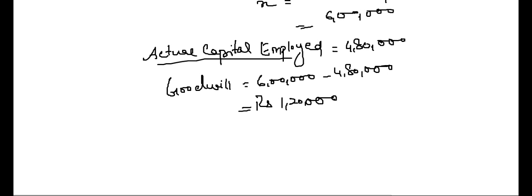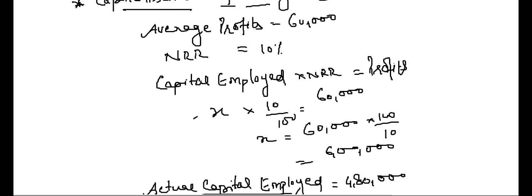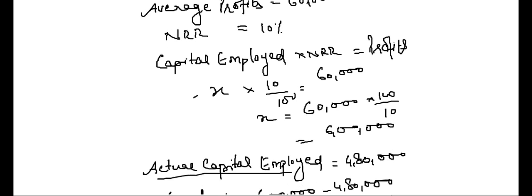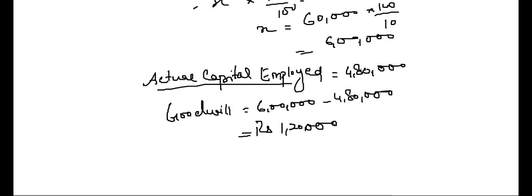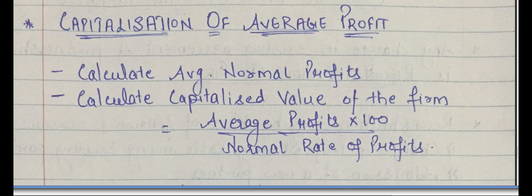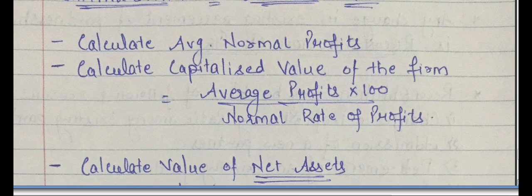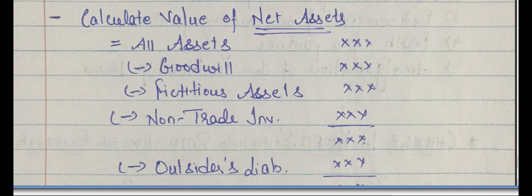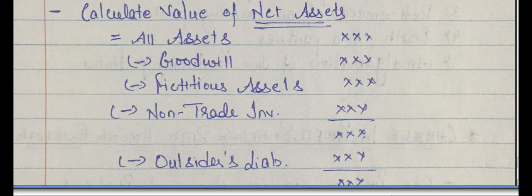So, under the capitalization method, we capitalize the average profits to find out the capitalized value of business, and we calculate the actual capital employed. The actual capital employed is: all assets minus goodwill, minus fictitious assets, minus non-trade investments, minus outsiders' liabilities.